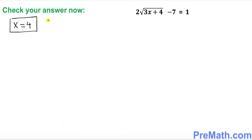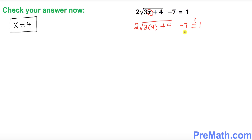Finally, we want to check our answer. Since x equal to 4 is our solution, we plug it in — wherever we see x, replace it by 4. That becomes 2 times the square root of 3 times 4 plus 4, minus 7. Let's go ahead and simplify: that's 2 times the square root of 12 plus 4, minus 7.